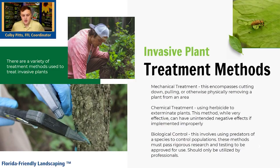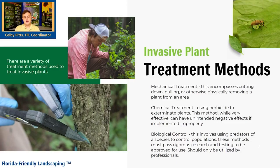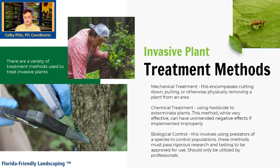Another example is chemical treatment, which is typically one of the most efficient treatments. If used correctly, there aren't a lot of negative effects. One treatment method shown in the lower left picture is hack and squirt — a chemical treatment where you cut into the stem or trunk of a woody plant and coat that connective tissue with a strong herbicide. The plant does the work for you, carrying that herbicide up and down to take care of it.